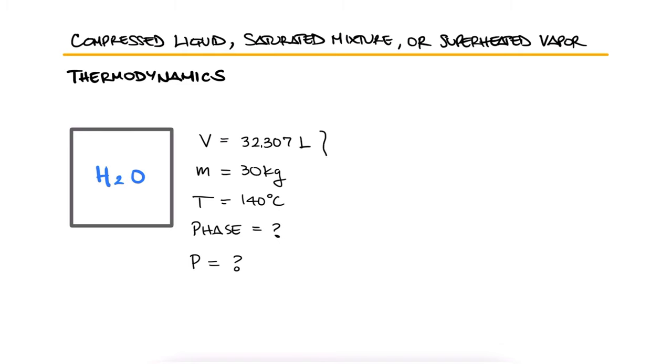If we have the volume and the mass of the water, we can easily calculate the specific volume. The specific volume would be equal to 0.0010769 cubic meters per kilogram.